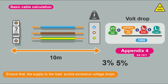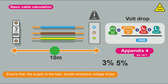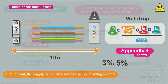Voltage drop is a decrease of electrical potential along the length of a cable — the longer the cable, the greater the voltage drop. We want to make sure that voltage drop is not so great that it affects the operation of any appliance or equipment. You can also use it to verify that a circuit cable is not too long.